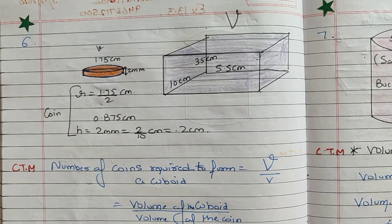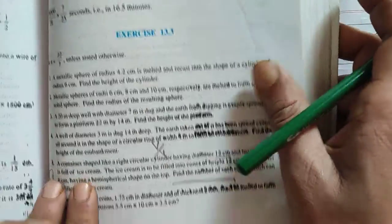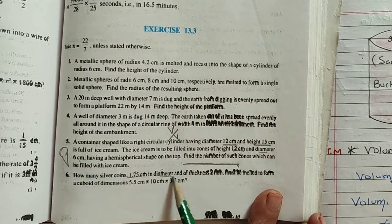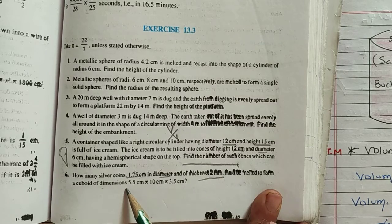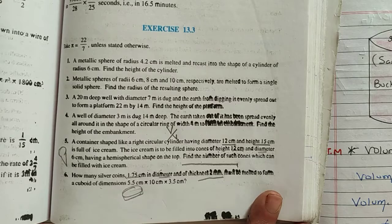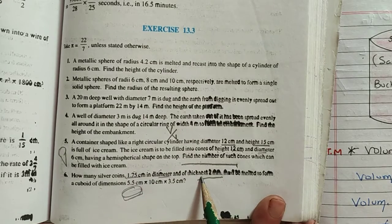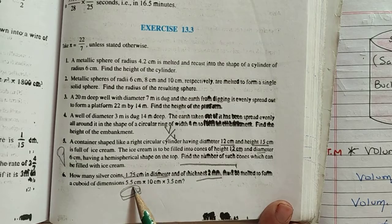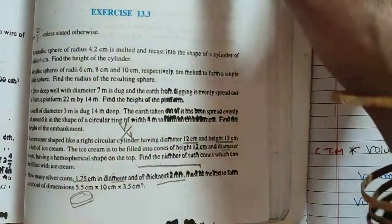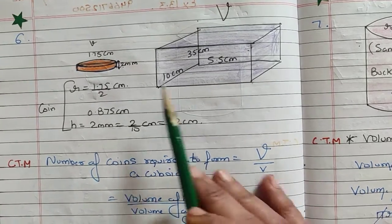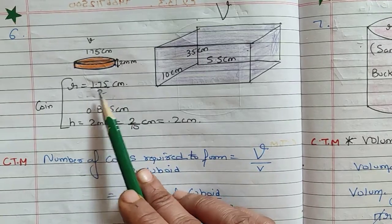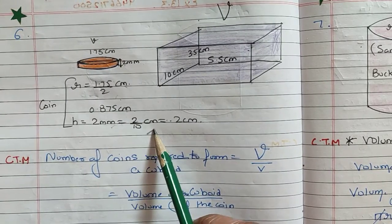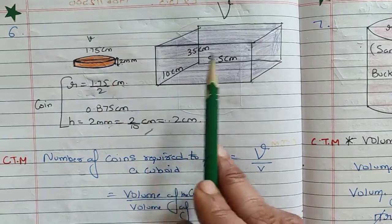Now moving to the next question from your NCERT. This question asks: how many silver coins, 1.75 cm in diameter and thickness 2 mm, must be melted to form a cuboid of dimensions — length, breadth, and height given? This is the same 'number of things' concept. The coin is cylindrical in shape, and the radius will be half the diameter. We convert the thickness to centimetres by dividing by 10.